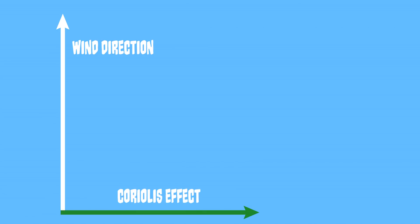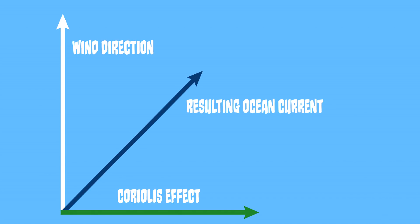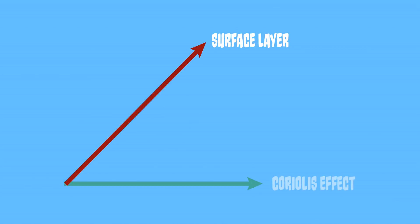In the Northern Hemisphere, this deflection is to the right. These two forces will then balance out, and the resulting water will flow at a 45 degree angle to the right of the wind. This surface layer of water transfers energy to the next layer of water through friction. This pushes it at a 45 degree angle to the right of the wind, but at a reduced speed compared to the surface layer. However, the secondary layer of water is also acted upon by the Coriolis Effect, pushing it farther to the right.